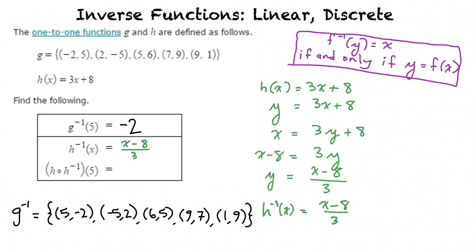There is now one last part. Find h of h inverse of 5. Interestingly, when we have h multiplied by its inverse, it is cancelled out. So h of h inverse of 5 equals 5.